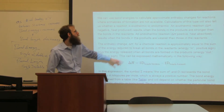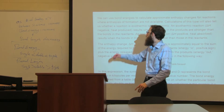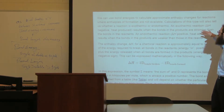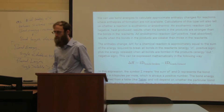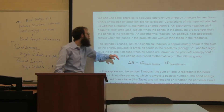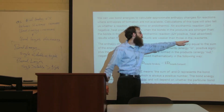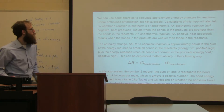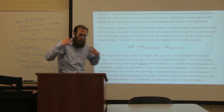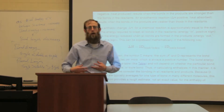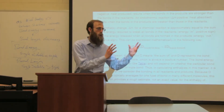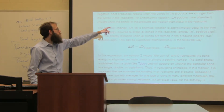An exothermic reaction results when the bonds in the products are stronger than the bonds in the reactants — more energy is released forming the products than was put in breaking the reactants. An endothermic reaction — when ΔH is positive and heat is absorbed — happens when the bonds in the products are weaker than those in the reactants, meaning energy had to be put in to make the products form.